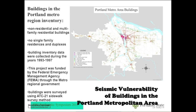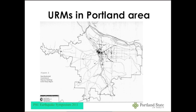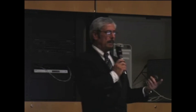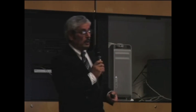We're looking at all different building types within the growth boundary, concentrating on the Portland Quad for further analysis. The URMs — unreinforced masonry buildings — are probably the worst offenders in terms of earthquake performance. The final results are given in terms of average scores. Remember, the higher the score, the better they perform. We show the areas in millions of square feet, the number of buildings, their types, and what their scores turn out to be.